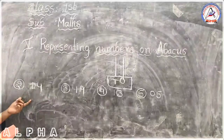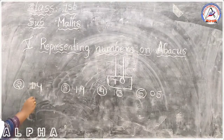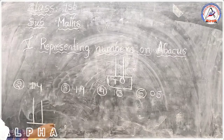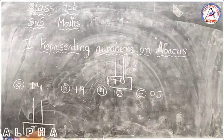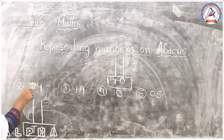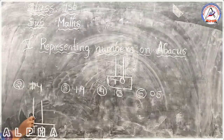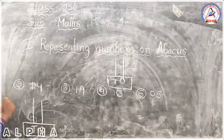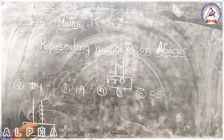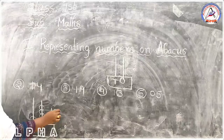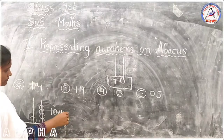Observe our second example. The given number is 14. Now I am representing this number on the Abacus. This is the tens rod and this one is the ones rod. How many tens and ones are in the number 14? One ten. And how many ones are there? Four — 1, 2, 3, 4. So: how many tens? One ten. Plus how many ones? 1, 2, 3, 4. It means 14.